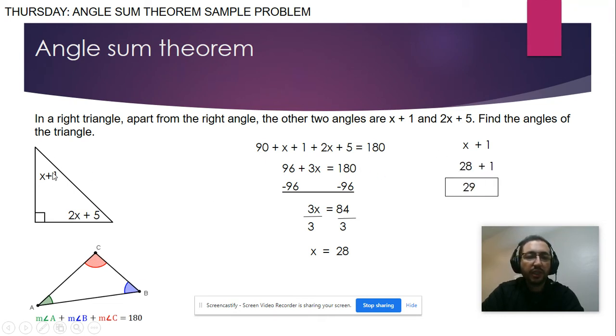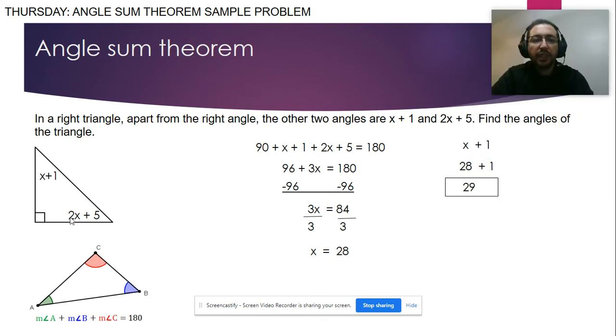Now the other angle will be 2x plus 5. Okay, and replace the x with 28. 2 times 28 plus 5, so 56 plus 5 will be 61.